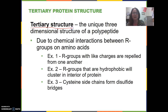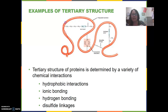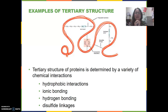The tertiary structure is the final three-dimensional shape of the protein. Here's an analogy you can use: there was a time that phones had cords. The phone cord that's spiral shaped — that is the helix, the secondary structure. But if you took that phone cord and tied it in a knot or several knots, that would be the tertiary structure.